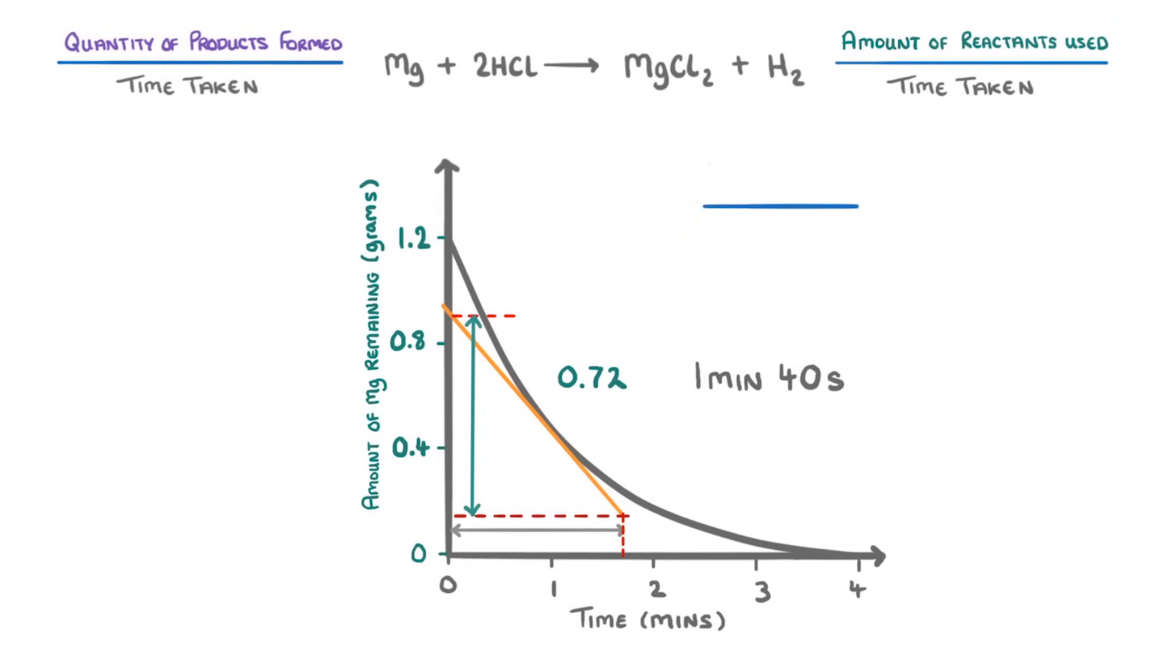And finally we'd divide our change in y by our change in x, so 0.72 divided by 1 minute 40, or 100 seconds, to find our rate of 0.0072g per second.